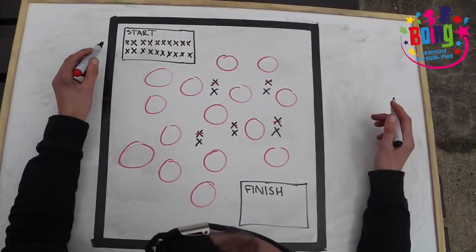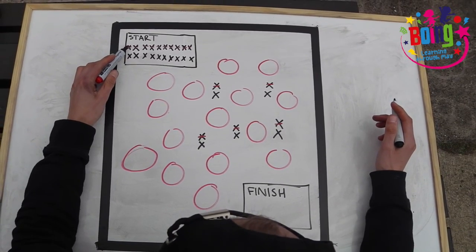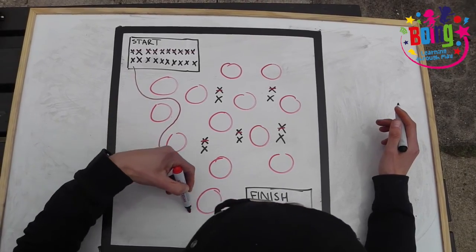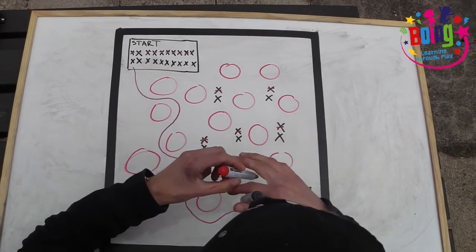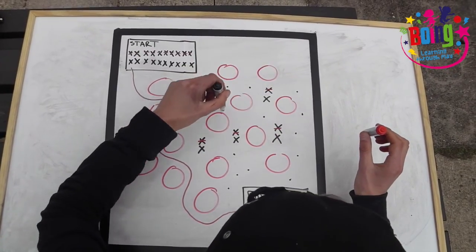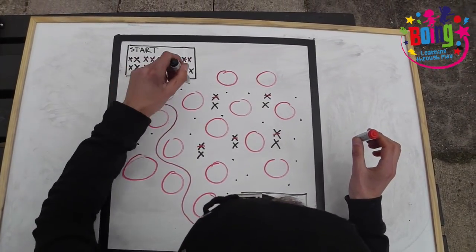On the word go, the guides must navigate their partner around the hula hoops to the finish, collecting five bits of treasure as they go.